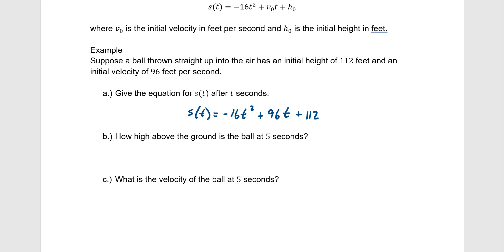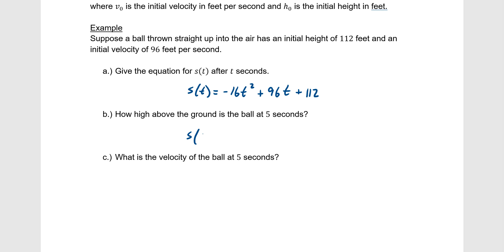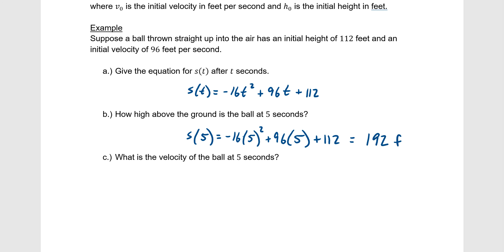To find the height at 5 seconds, plug T = 5 into S(T): −16(5²) + 96(5) + 112 = −400 + 480 + 112 = 192 feet. So after 5 seconds, the ball is 192 feet above the ground.